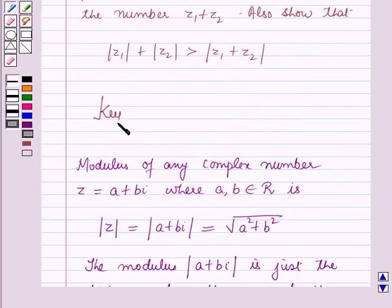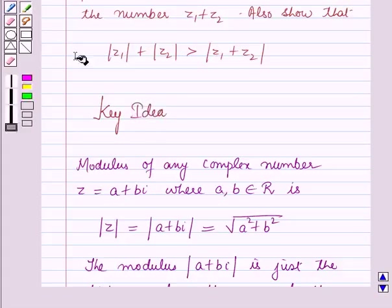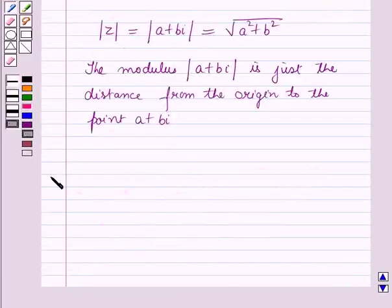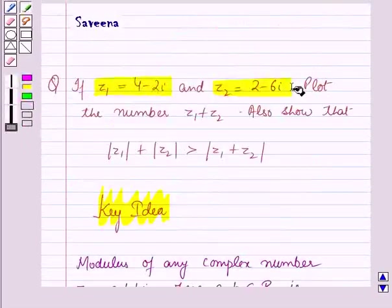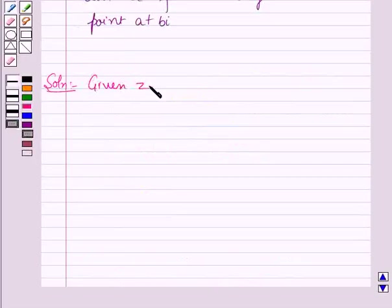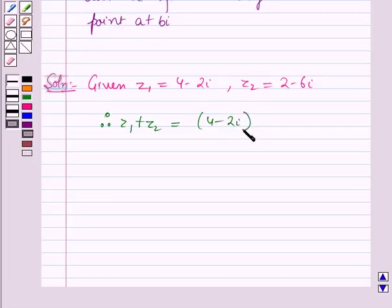This result will work out as a key idea for solving this question. Now we will start with the solution. Z1 and Z2 are given to us and we have to plot this number. Z1 is equal to 4 minus 2 iota and Z2 is equal to 2 minus 6 iota. Therefore Z1 plus Z2 equals 4 minus 2 iota plus 2 minus 6 iota, which on solving gives 6 minus 8 iota.